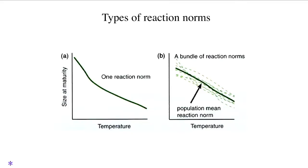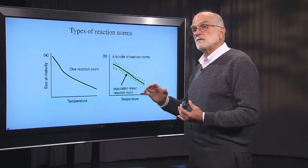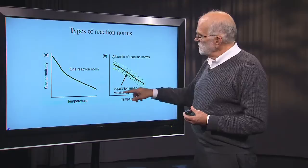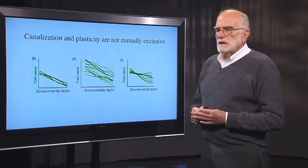For example, if we graph size at maturity against temperature, in many organisms the warmer it is, the smaller they are when they mature; the colder it is, the bigger they are when they mature — they grow more slowly and to a larger size at cold temperatures. That would be one reaction norm — a function that maps the genotype onto the phenotype as a function of the environment, and it is a property of a single genotype. If we look at a population, a population is then a bundle of reaction norms, one for every genotype. We can take a mean and imagine a population mean reaction norm — the average plastic response of that population to the environment.